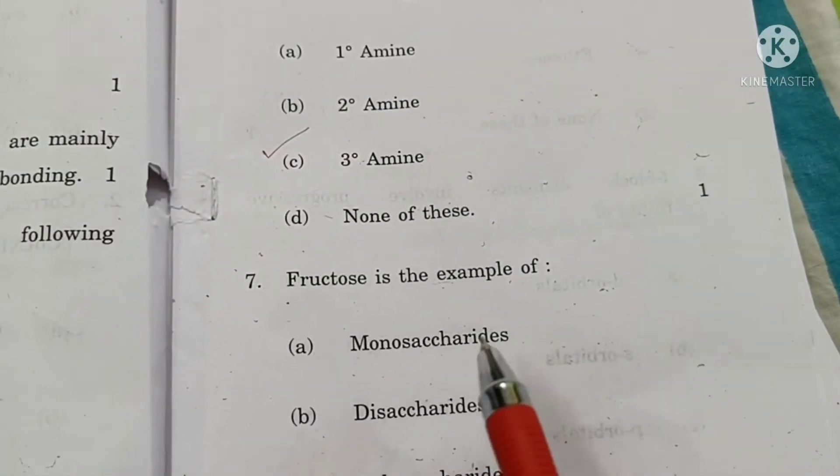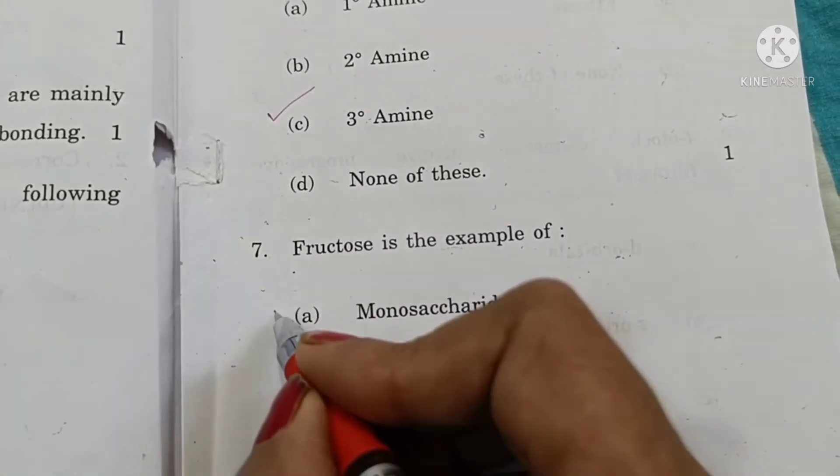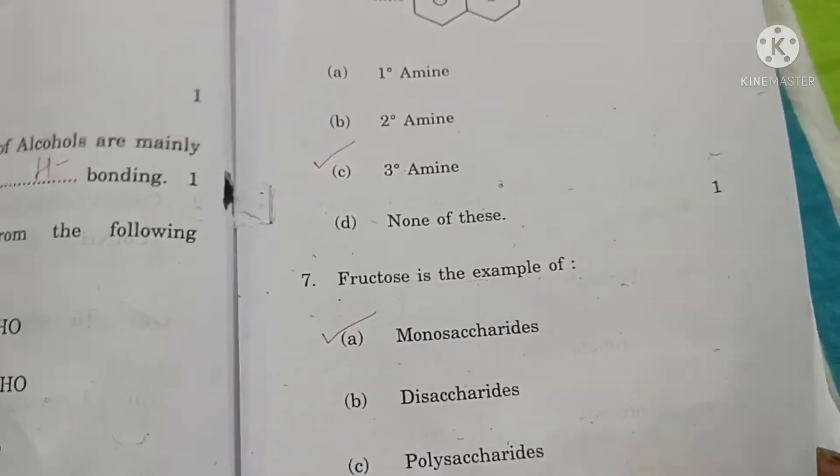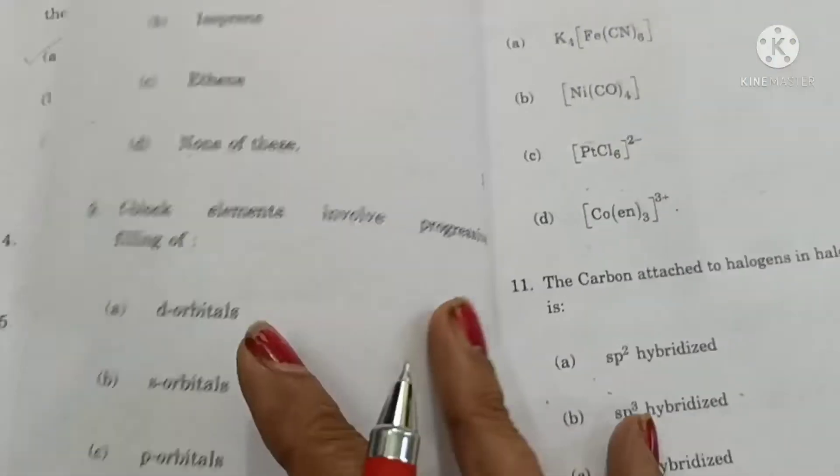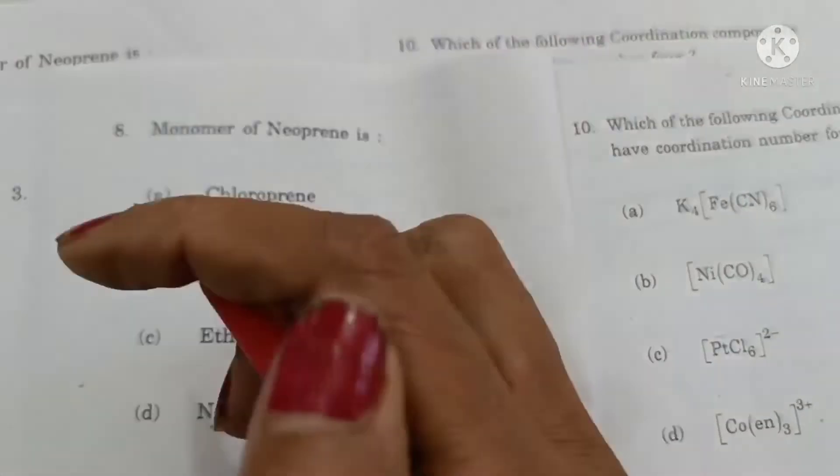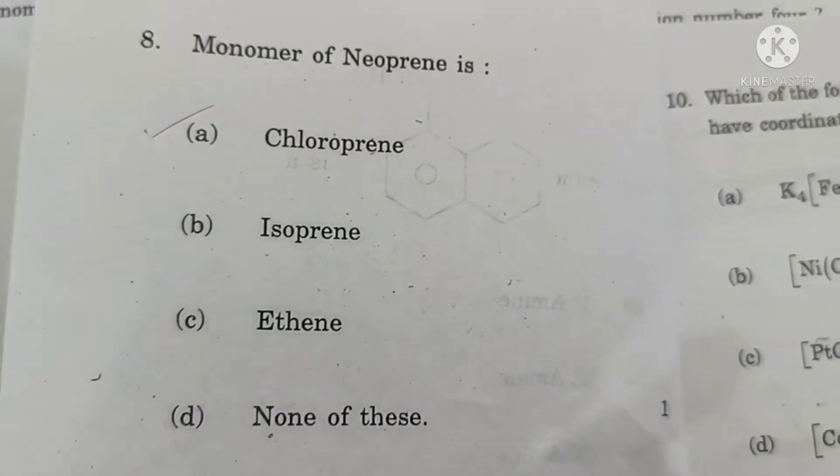Fructose is an example of monosaccharide. It has ketone as a functional group, C6H12O6. Then monomer of neoprene is chloroprene. Option A is the correct answer.